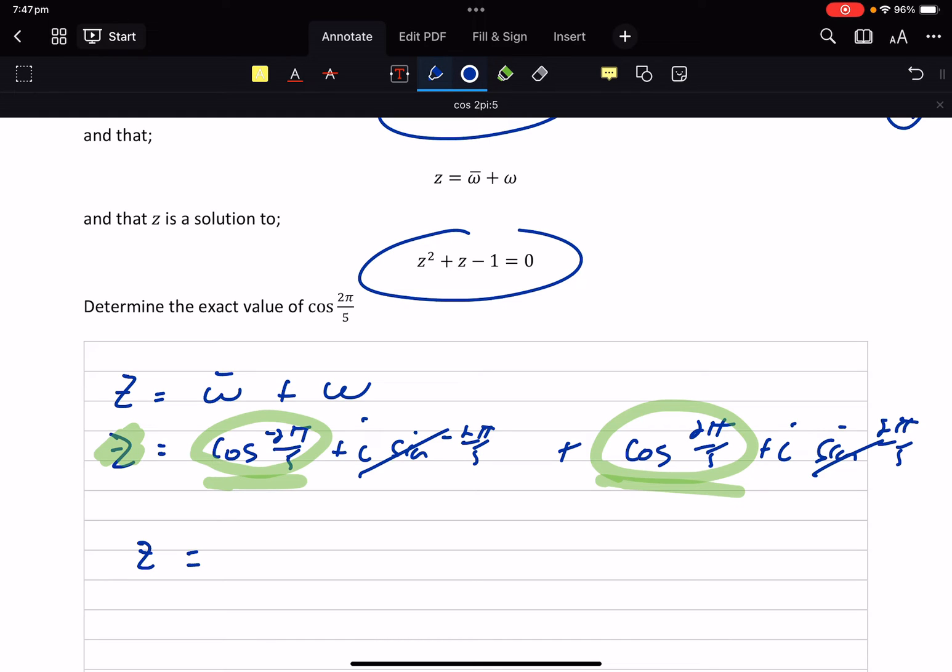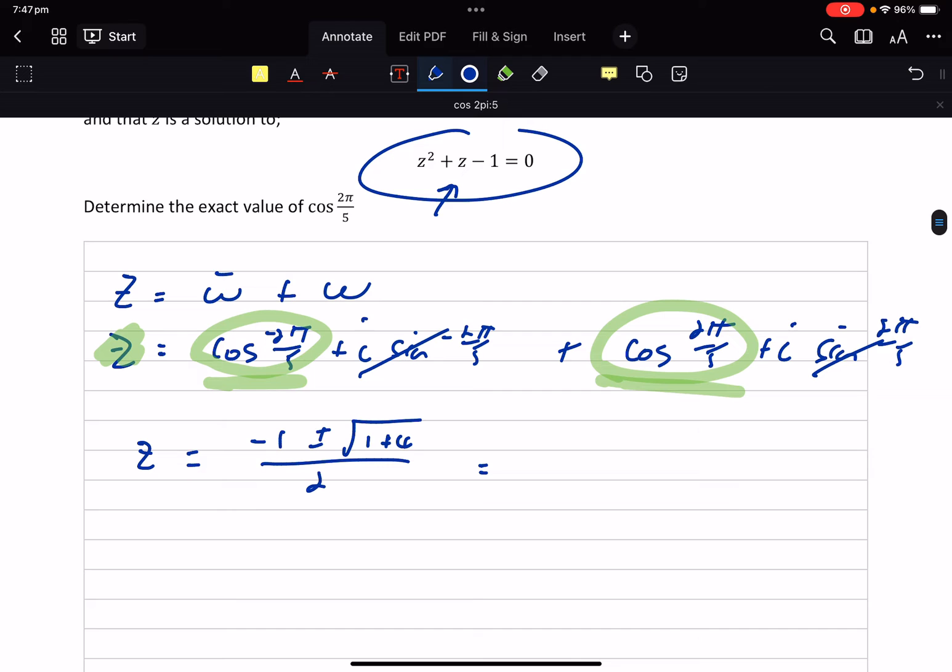So minus b plus or minus the square root of b squared minus 4ac. So the two negatives make a positive on 2a. So that's going to be minus 1 plus or minus root 5 on 2.